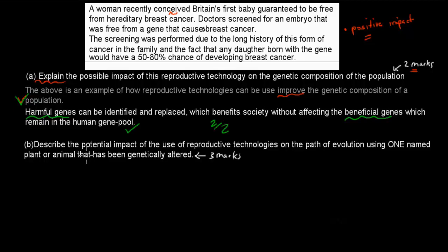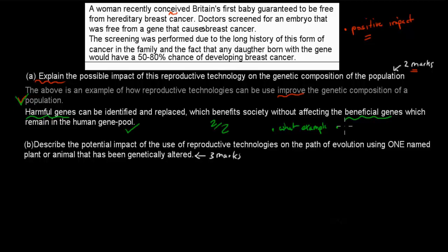The next part says: describe the potential impact of the use of reproductive technologies on the path of evolution, using one named plant or animal that has been genetically altered. I'll talk about the goat that produces antithrombin, but you could have chosen any different plant or animal. What you should do is briefly describe your example — the transgenic species — and then talk about whether the genetic alteration is for the benefit of that species or for the benefit of humankind, and whether that could change its evolution.